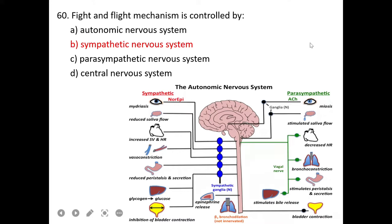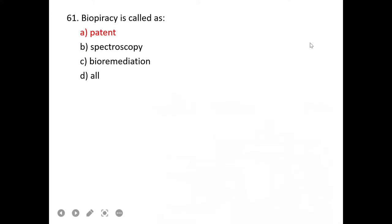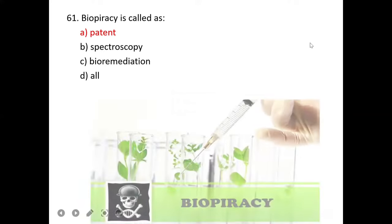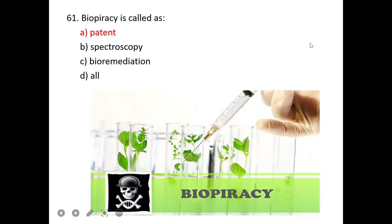Which one is intercellular messenger? Exosomes are intercellular messengers. Pressure receptors of skin are Pacinian corpuscles. These are touch receptors. Thermoreceptors are heat or temperature sensitive. D is correct.